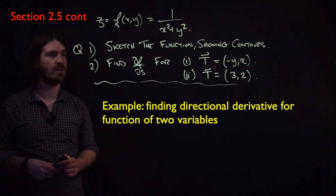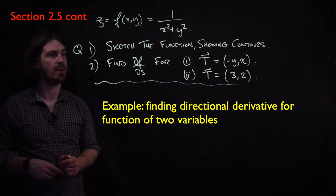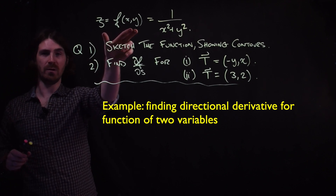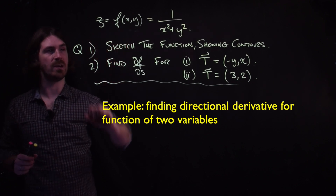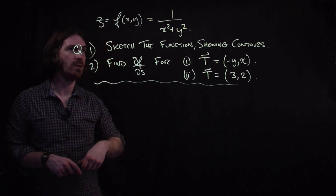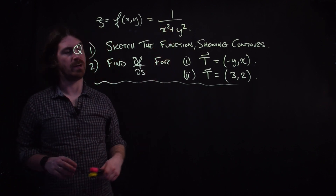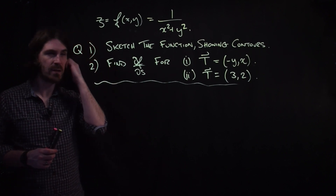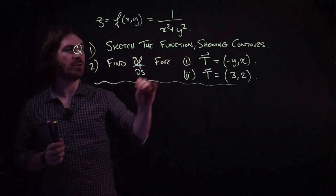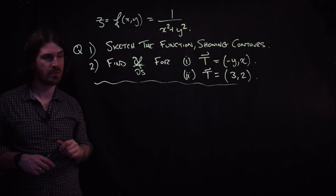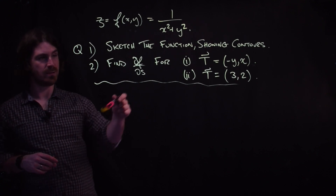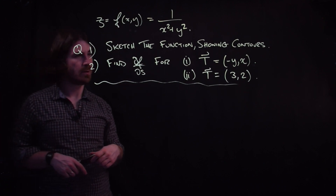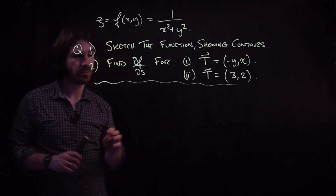Let's end this section with an example. We've got a function of two variables, z equals f of x and y, and the function is 1 over x squared plus y squared. We have to do two things: sketch the function showing the contours, and then find the directional derivative df by ds for two different paths.